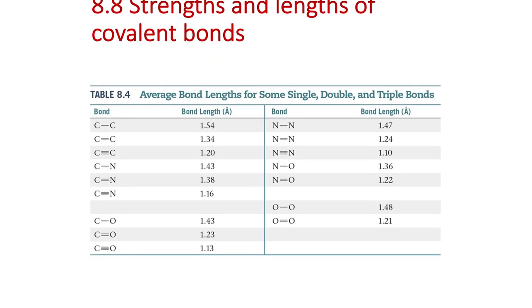Double bonds are shorter and stronger: a C–C double bond is 614 kJ/mol versus 348 kJ/mol for a C–C single bond. Triple bonds are even stronger — the N≡N triple bond is 941 kJ/mol, very stable and hard to break, while N=N double is weaker and N–N single is very weak at 163 kJ/mol. Single to double to triple: triple bonds are stronger, shorter, with more electrons being shared and more glue between the nuclei.